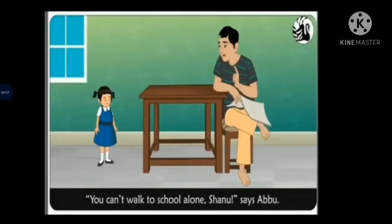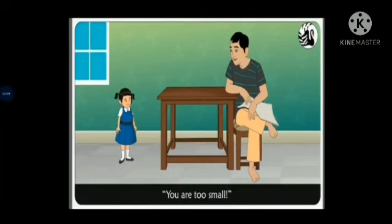"You can't walk to school alone, Shani," says Abu. "You are too small." Abu means father. Shani's father tells her that she cannot walk alone to school because she is too small. "Too small" means smaller than needed for something.